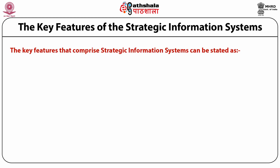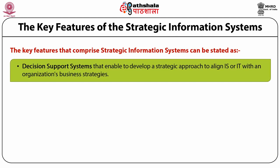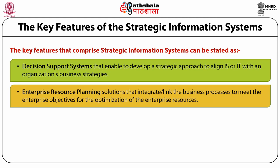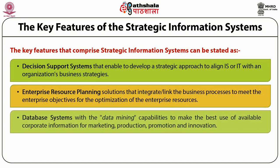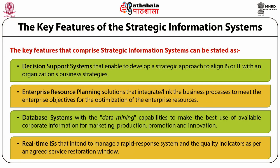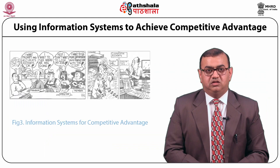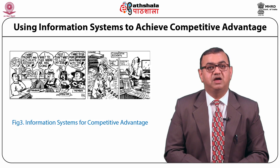Now let us look at the key features of strategic information systems. These include: the decision support system that enables development of a strategic approach to align information systems with an organization's business strategy; enterprise resource planning solutions that integrate and link business processes to meet enterprise objectives for optimization of enterprise resources; database systems with data mining capabilities to make the best use of available corporate information for marketing, production, promotion and innovation; and real-time information systems that manage rapid response systems and quality indicators as per an agreed service restoration window.